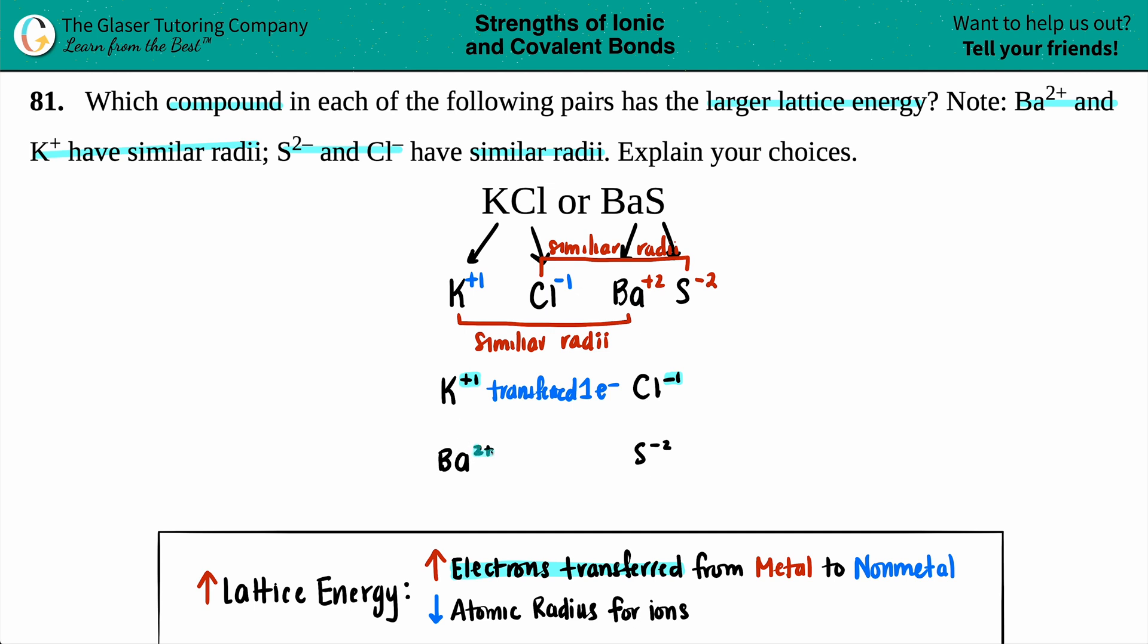For barium, it's +2, meaning it lost two electrons. Sulfur is -2, meaning it gained two electrons. So from barium to sulfur, it transferred two electrons. Remember, the higher the amount of electrons transferred, the more the lattice energy.